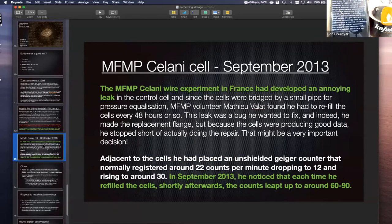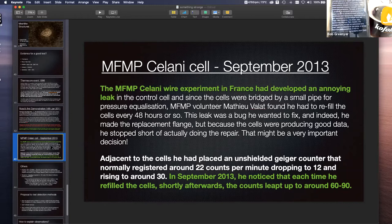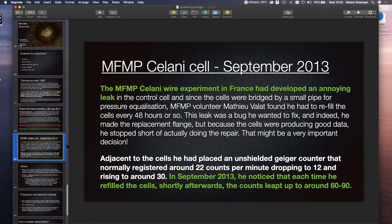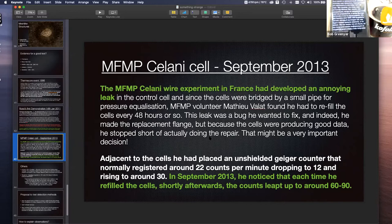Now, in 2013, we had some Chalani wire in a cell that developed a leak. And so we had to refill it periodically. And in September of that year, we realized our volunteer, Matthew Velat, realized that every time he was refilling it, the counts tripled and then fell back away shortly. And so something was going on that was causing this GMC 300 to produce a signal that looked like there was gamma coming out.